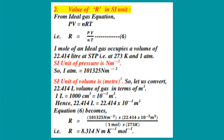Next is the value of R in SI units. Again we start from the ideal gas equation PV equals nRT, so R equals PV divided by nT, equation 6. One mole of an ideal gas occupies 22.414 liters at STP, where temperature is 273 Kelvin and pressure is 1 atmosphere. This pressure needs to be converted to its SI unit: the SI unit of pressure is Newton per meter squared, and 1 atmosphere equals 101325 Newton per meter squared.